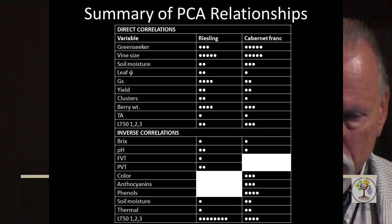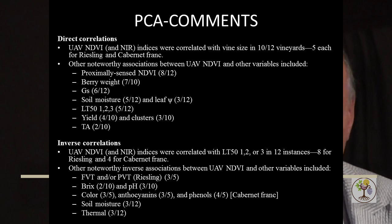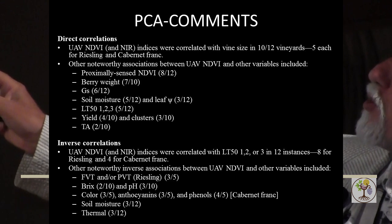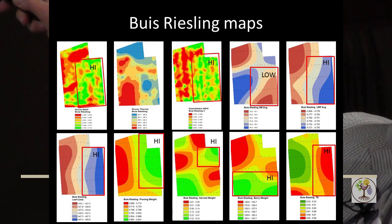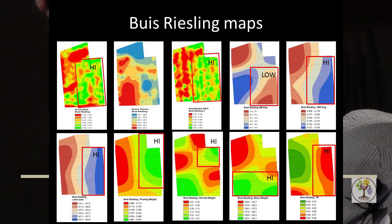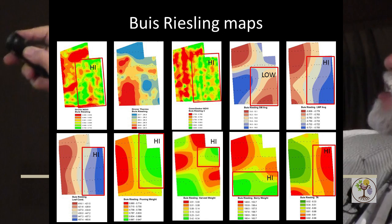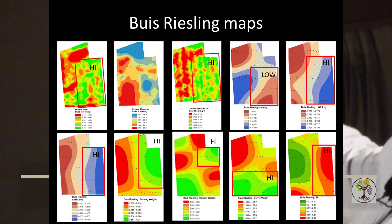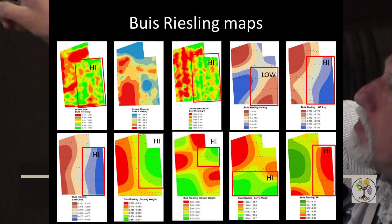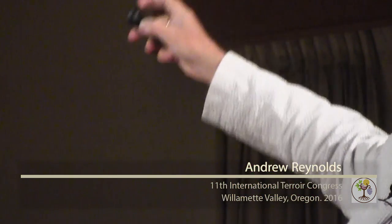Looking quickly at the maps: one or two maps kind of tell you the whole story. These high NDVI zones shown by UAVs are giving us the same high NDVI zones that the Green Seeker gave us, and also relatively high leaf water potential, pruning weight, berry weight, and TA.